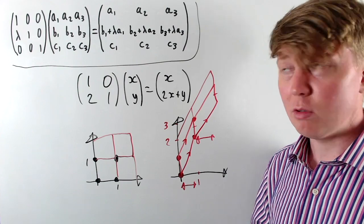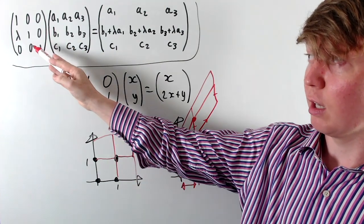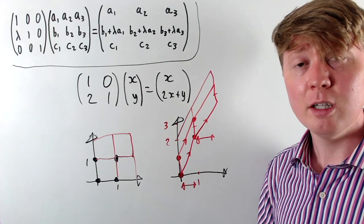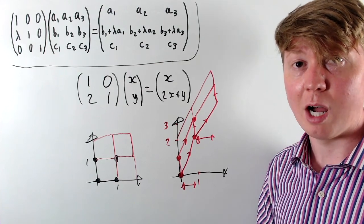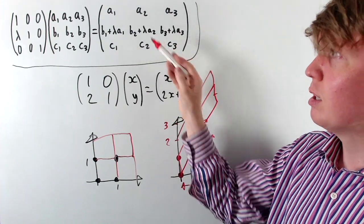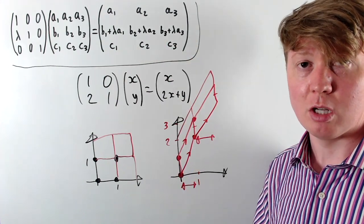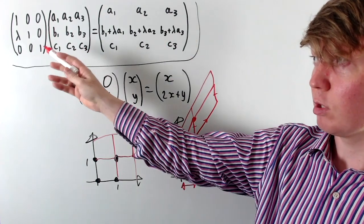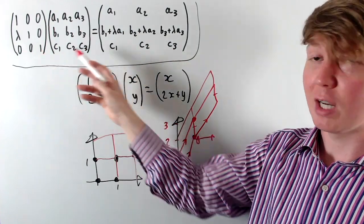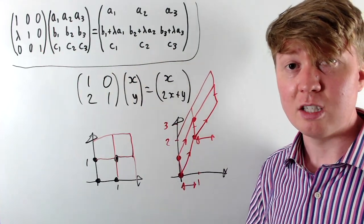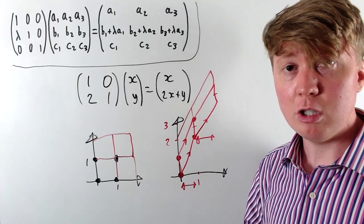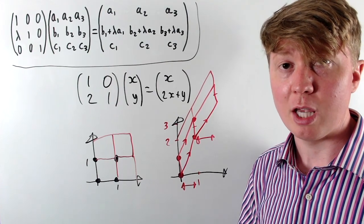This is a nice geometric interpretation: adding a scalar multiple of one row to another corresponds to a shear mapping in 3D, which doesn't change volume and therefore doesn't change the determinant. Similarly, for the column operation version, we multiply by this matrix on the right, and again the determinant doesn't change.